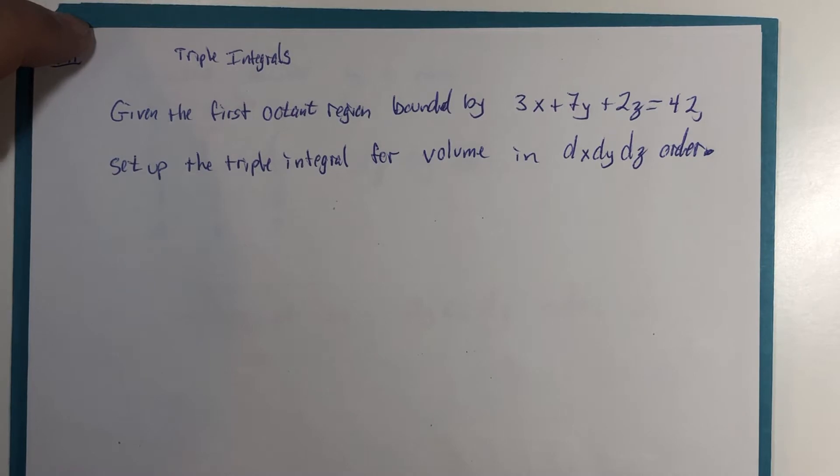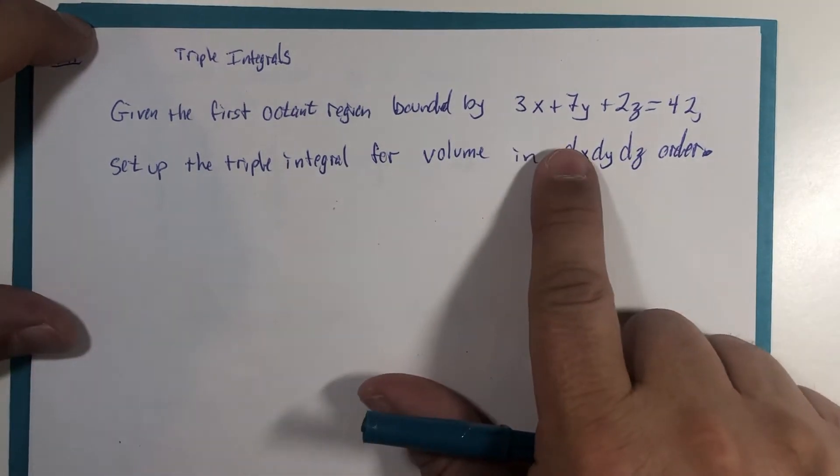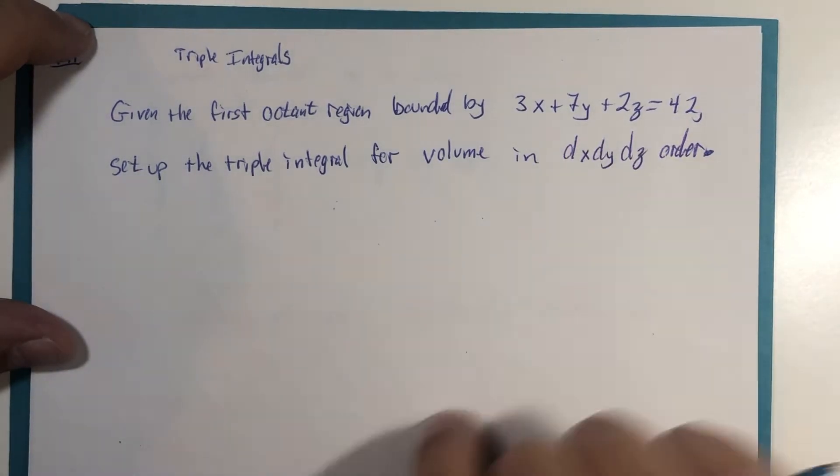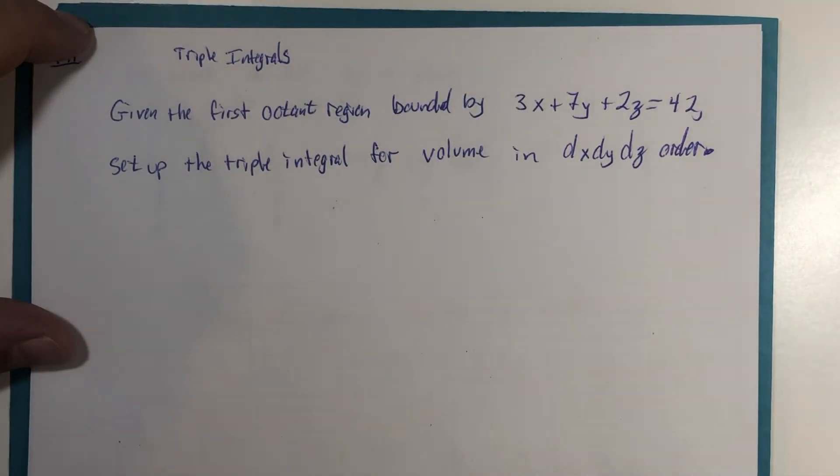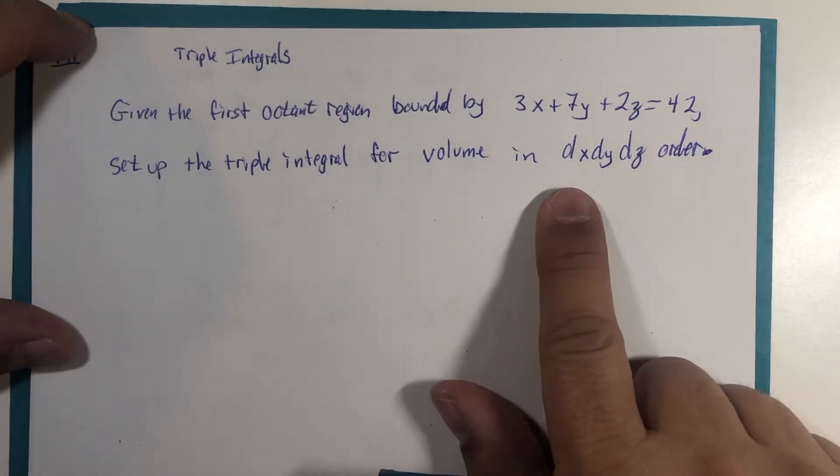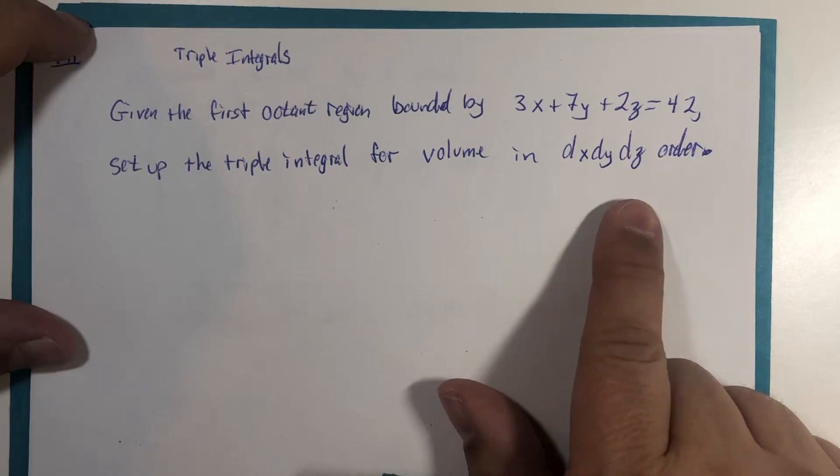First, the octant region bounded by the plane 3x plus 7y plus 2z is 42. We're going to set up the triple integral for volume, but we're going to use a non-standard order dx dy dz.